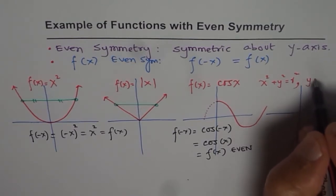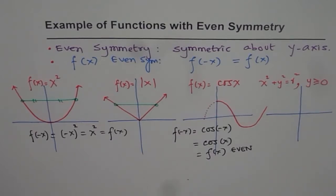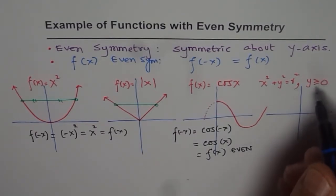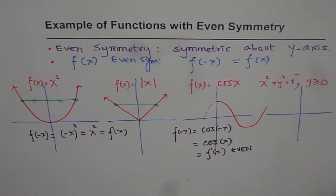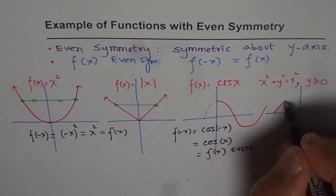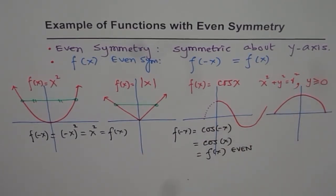If I say, well, if y is greater than or equal to 0, if I do that restriction, then what happens? Then it has even symmetry. Then we are only talking about the upper half or the semicircle. Do you see that? Then we are talking about semicircle.